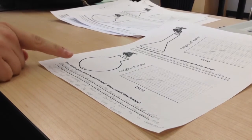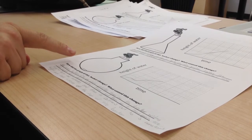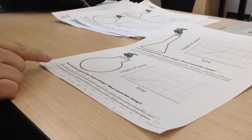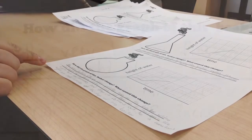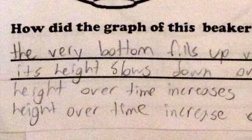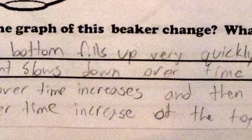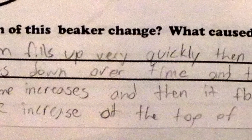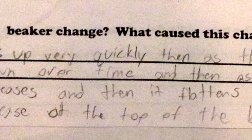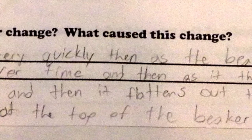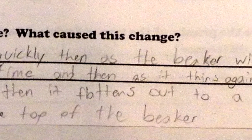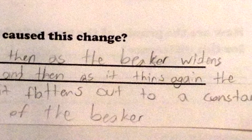In this example of the spherical beaker, we can see that the student has a good understanding of what is happening with the water filling up in the beaker as time passes. So the student writes, the very bottom fills up very quickly, then as the beaker widens, its height slows down over time, and then as it thins again, the height over time increases, and then it flattens out to a constant height over time increase at the top of the beaker.